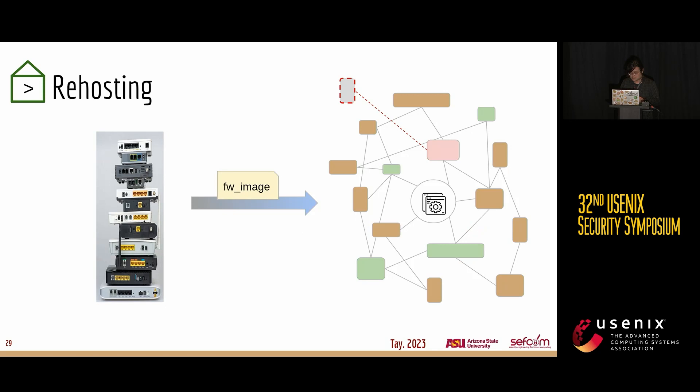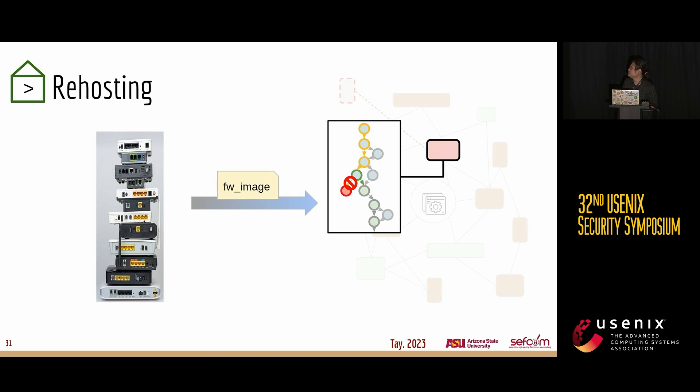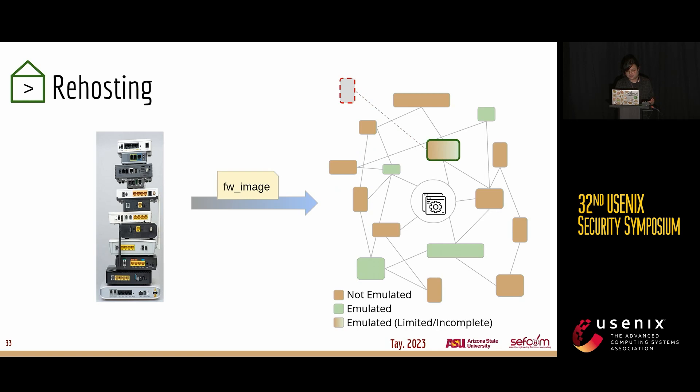For example, with the kernel module that the firmware was trying to load — instead of trying to generate and create support for it inside the emulation environment, what if we looked at the part doing the loading and just told it to ignore it, skip it, and continue as though the kernel module had been loaded correctly? In practice, we found that this actually worked quite well. We were able to not only re-host the web services we wanted to analyze, but also find bugs in these services that had nothing to do with the kernel module it was trying to load.